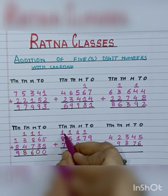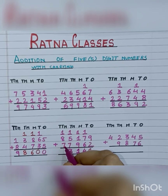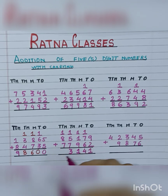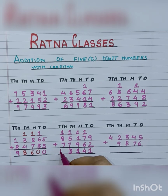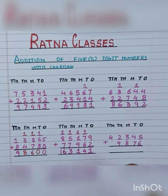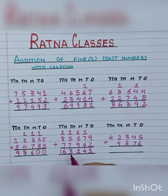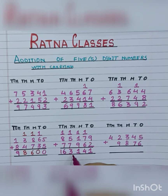Now 1 carry plus 8 is 9, and 9 plus 7 is 16. So we write 16 here. Our answer is 1,63,141.